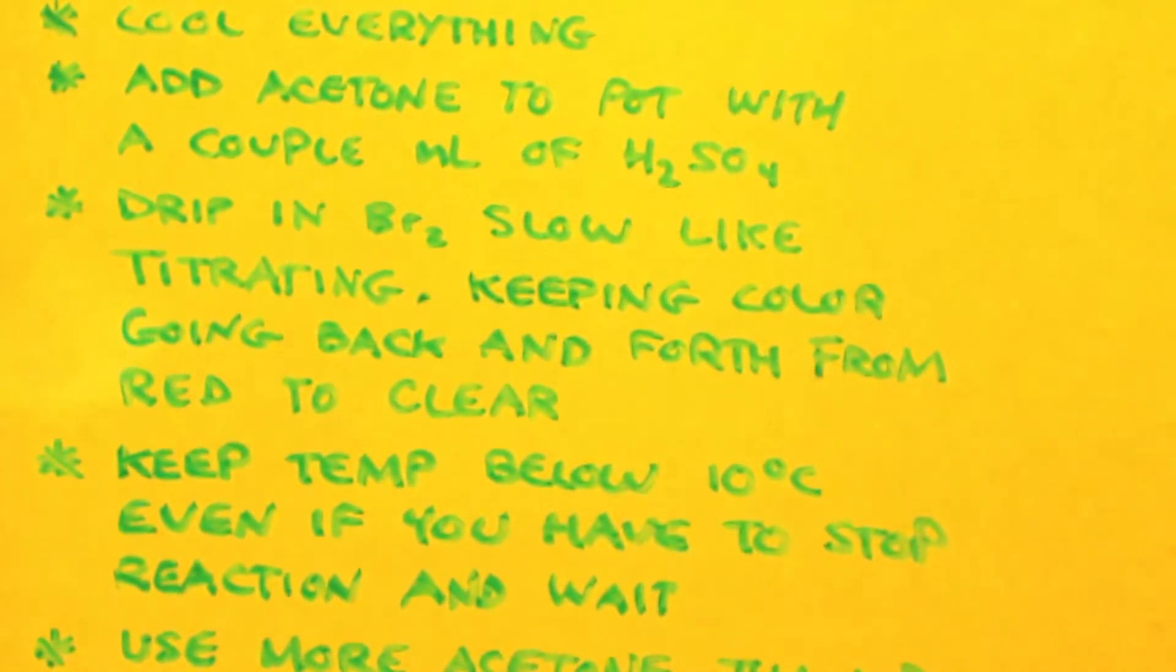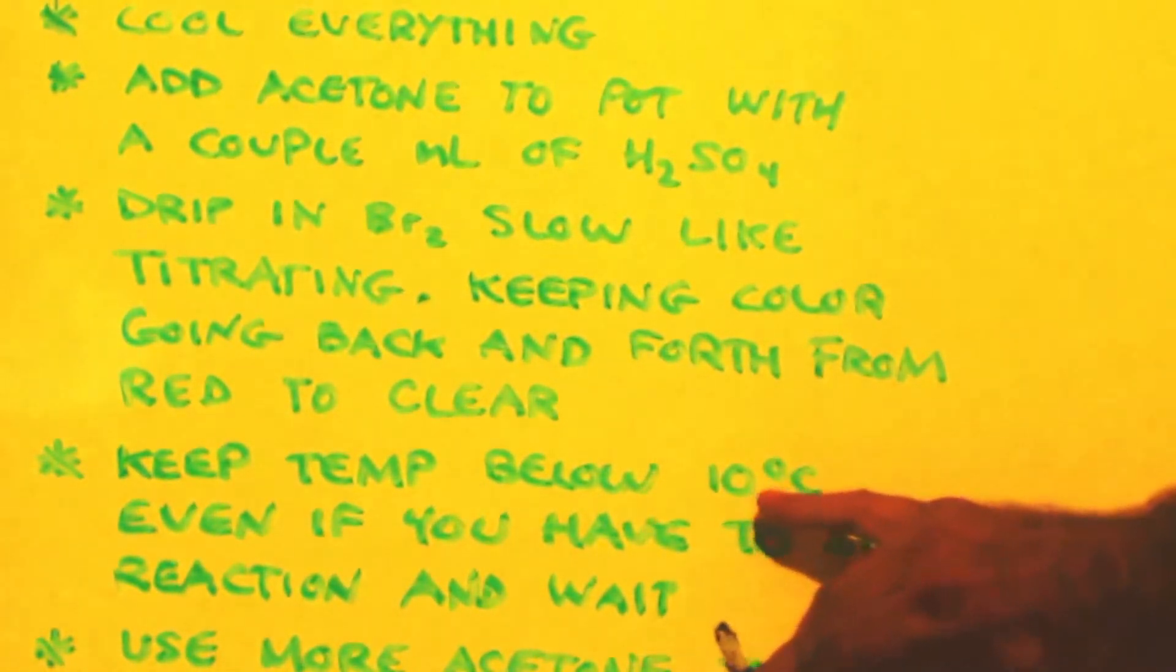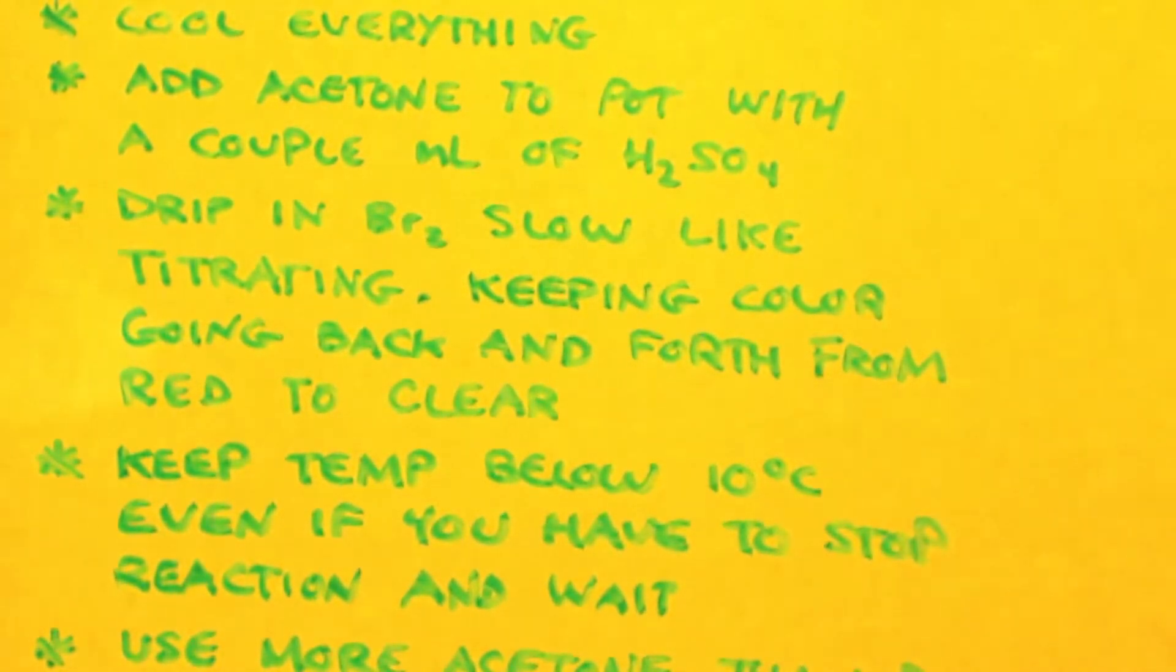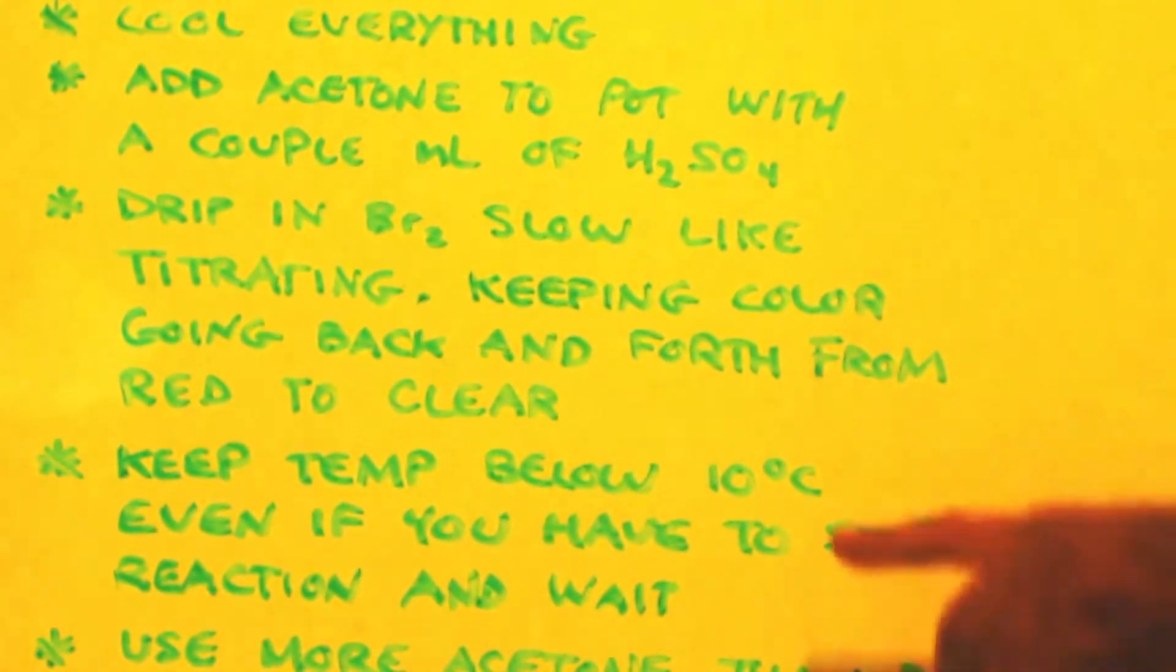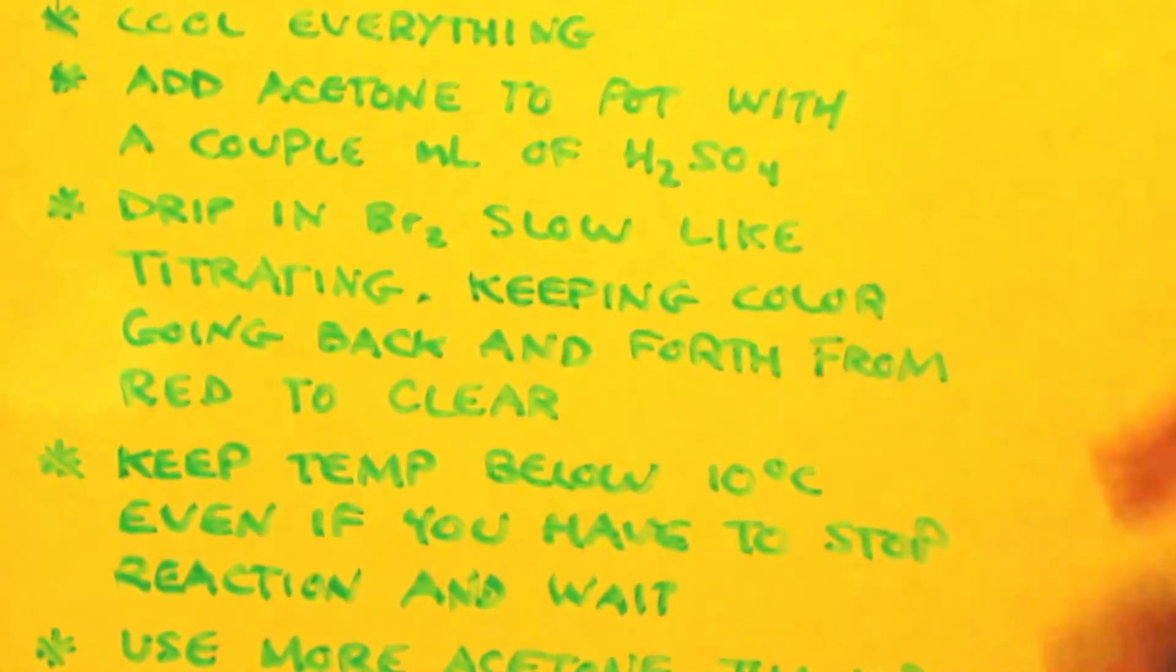You wait for the pot to cool back down to zero degrees or two or three degrees Celsius, even five degrees Celsius. Then you turn your bromine back on dripping. The main thing is it has time to heat up but not be above 10 degrees Celsius.